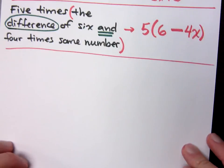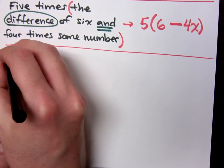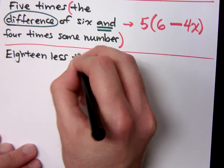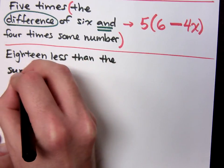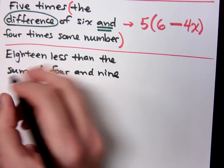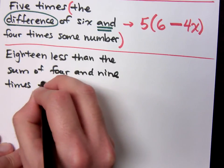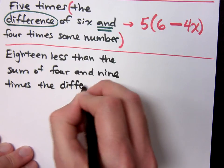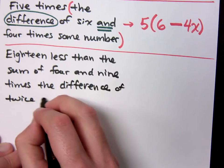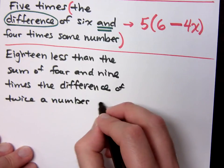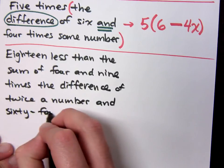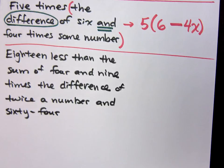Eighteen less than the sum of four and nine times the difference. The difference of twice a number and sixty-four.